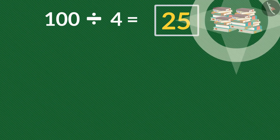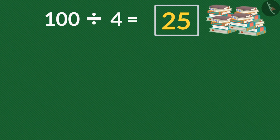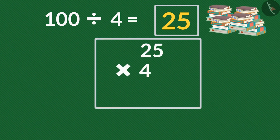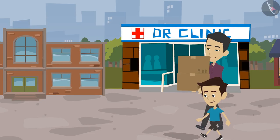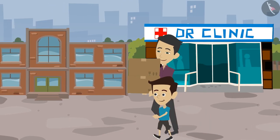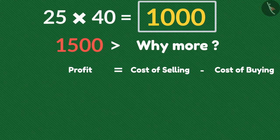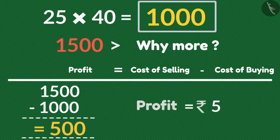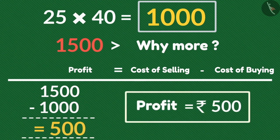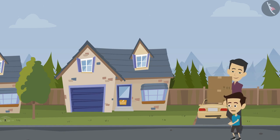100 divided by 4 is 25, so I will give 25 books to him. But Dad, 25 books cost one thousand rupees and we are taking 1500 rupees from uncle. Yes son, this is the profit. When we buy an item at a lesser price and sell it at a higher price, we will get a profit. If we sell the books costing one thousand rupees for 1500 rupees, then our profit is rupees 500. Oh wow Dad, this is very interesting!